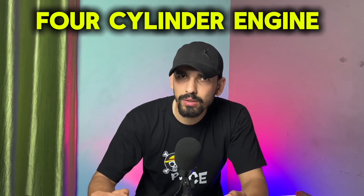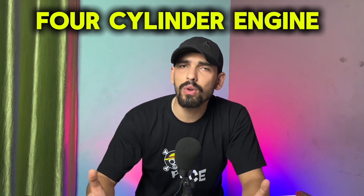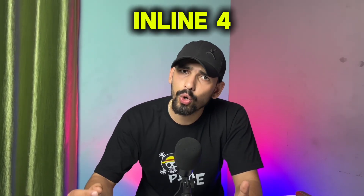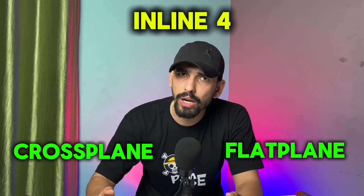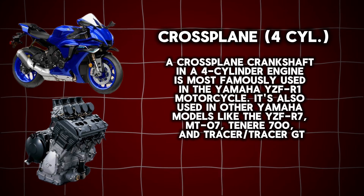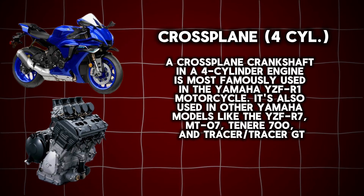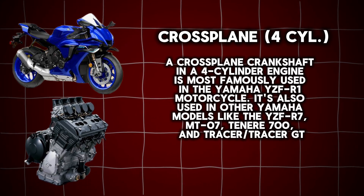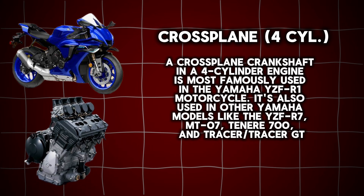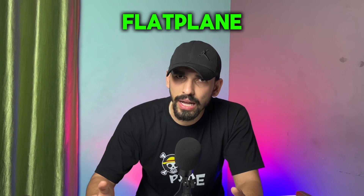Now comes the most interesting part — the 4-cylinder engines which is mainly found in the super bikes which we love. The first one we have is inline 4, which is also categorized into cross plane and flat plane. We can find the cross plane engine in bikes like the R1 and R6 and it sounds like this.